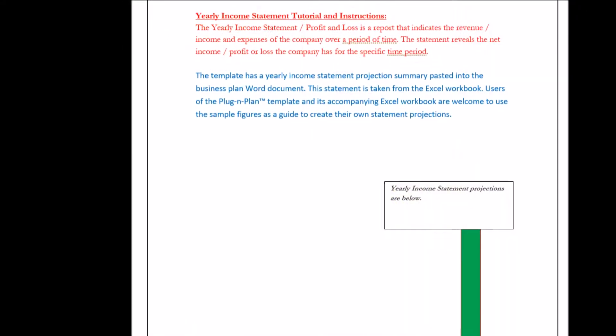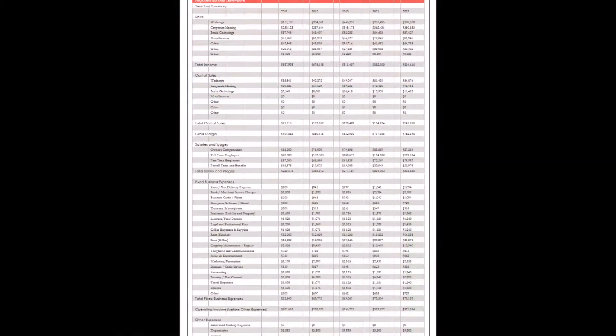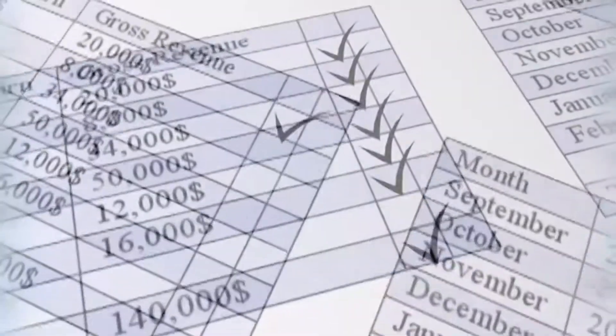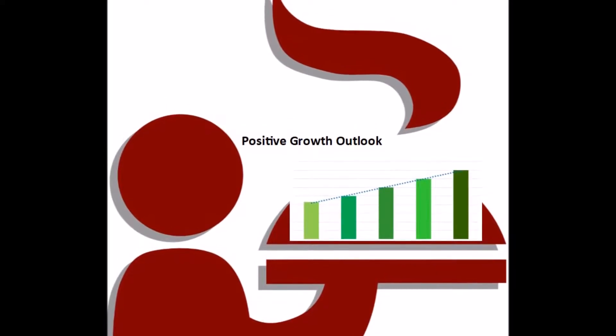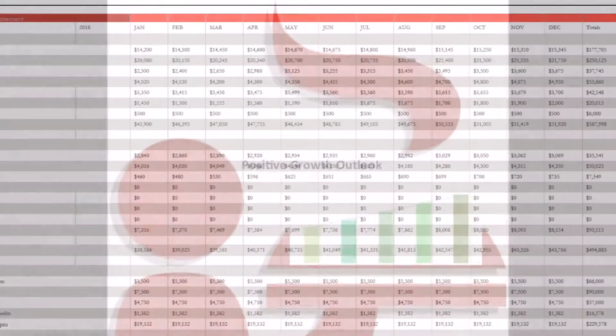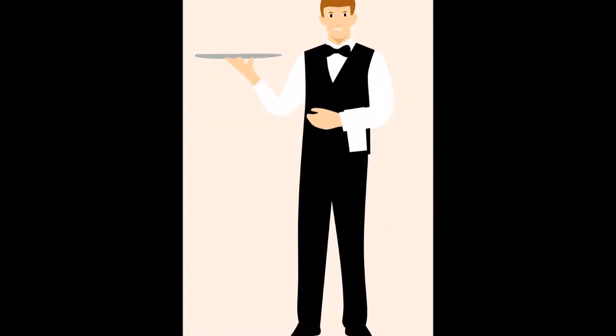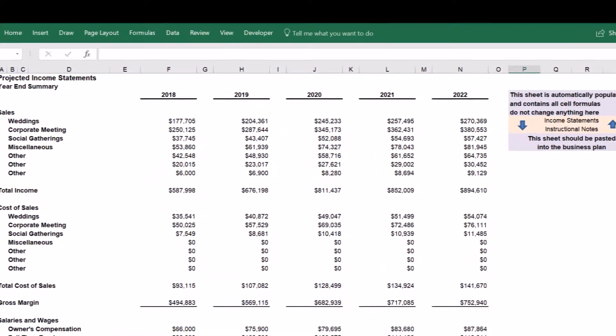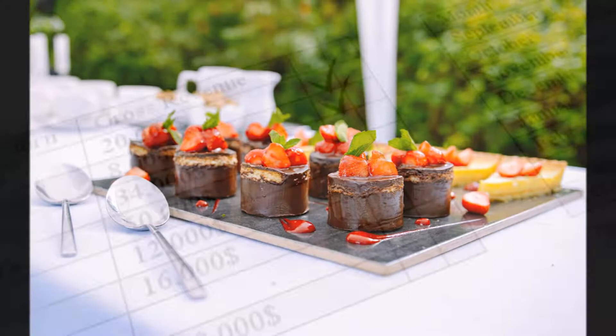Yearly Income Statement Tutorial and Instructions. The Yearly Income Statement, or Profit and Loss, is a report that indicates the revenue and expenses of the company over a period of time. The statement reveals the net income, profit, or loss the company has for a specific period of time.